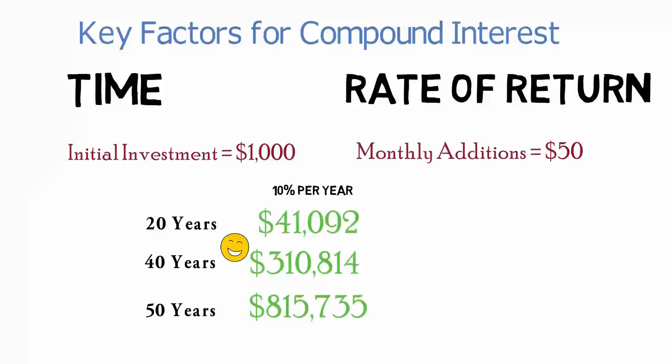What about the rate of return? If you return 15% over 10%, it's going to grow much more. That seems fairly obvious, but how much more? Well, that same $815,000 we just mentioned would turn into $5.4 million.